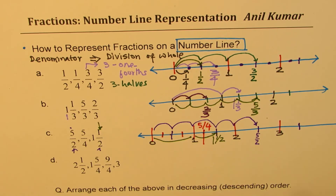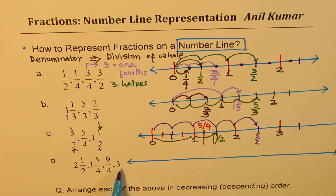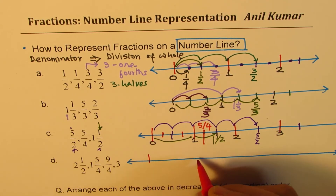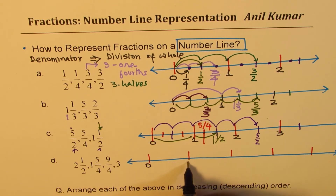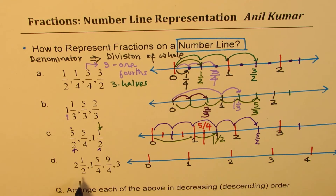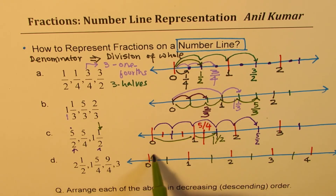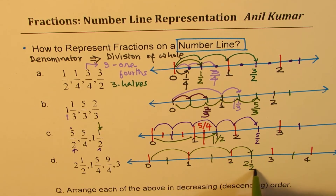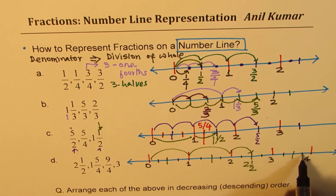The last one is actually a test question for you — pause the video and finish it off. You see a number three, so we have to go three or more. We'll begin with the same concept, marking zero, one, two, three, and four. The denominators are twos and fours. Let's do twos first — go by halves. Two and a half means one, two, and a half.